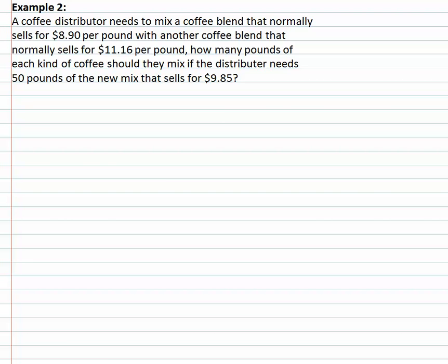Normally sells for eight ninety a pound, another coffee that sells for eleven sixteen a pound. These are what are being mixed together. We want to know how many pounds of each do we need to get fifty pounds that sells for nine eighty five. That's the goal, notice that's the final solution.